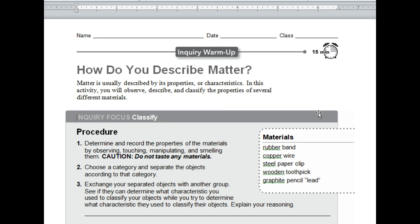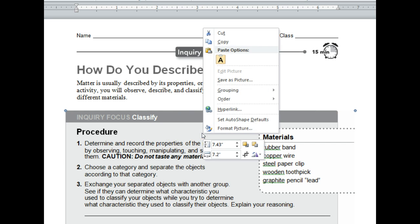So we're going to do an activity, and if you look at this the way I do, it says you should read up here because it sometimes gives you answers to some of the questions below. But it says matter is usually described by its properties or characteristics. In this activity, you will observe, describe, and classify the properties of several different materials.